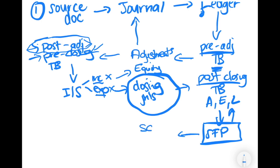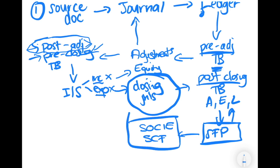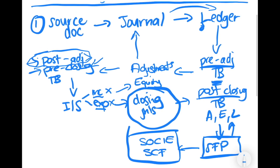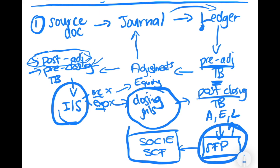For example, we can prepare the statement of changes in equity and the statement of cash flows, though those are really ancillary. What is most important in this process is understanding when we can do our income statement and when we can do our statement of financial position.